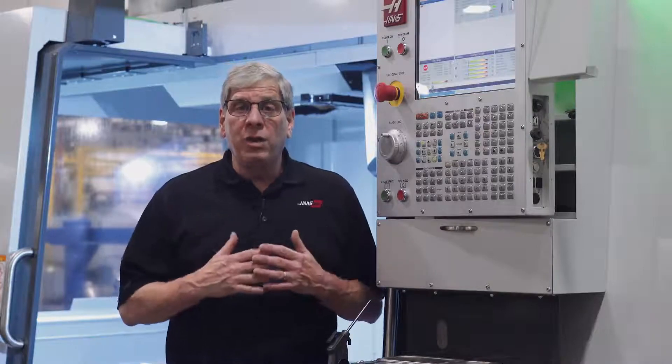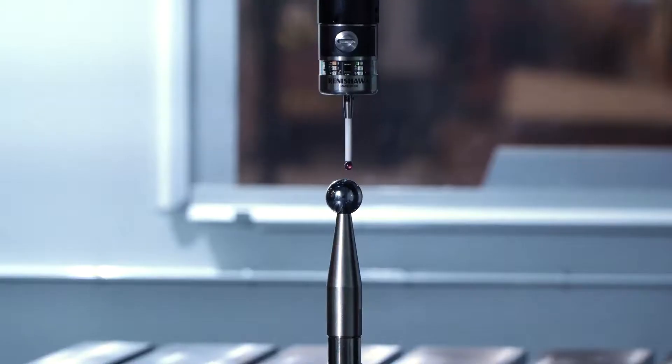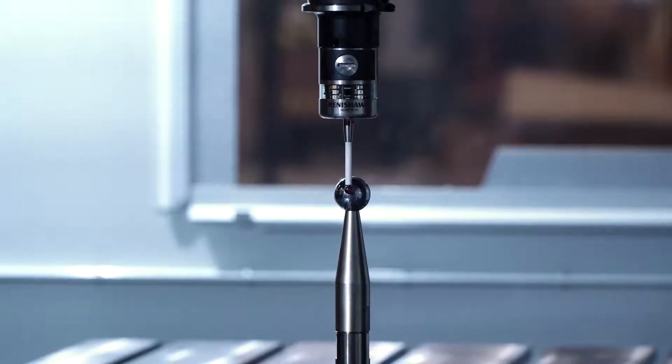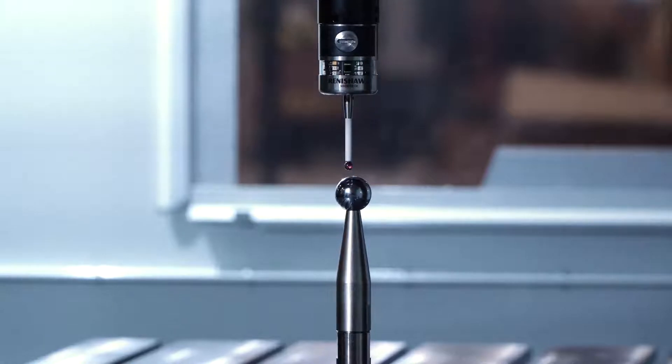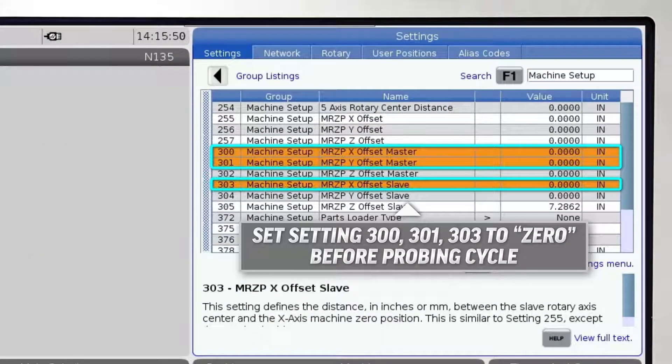Settings 300, 301, and 303 apply compensation to machine positions. When we're running the probing cycle to measure these values, there can be no compensation applied, so we need to set them to zero.